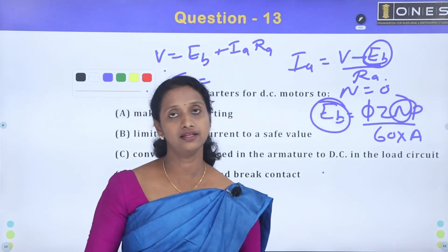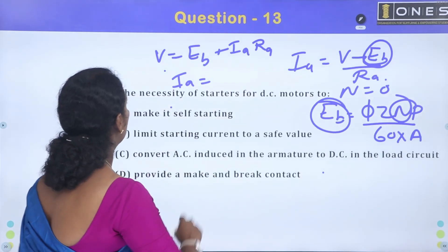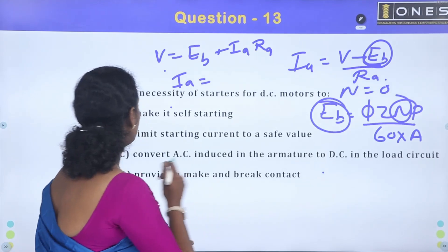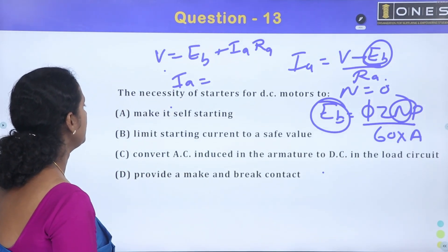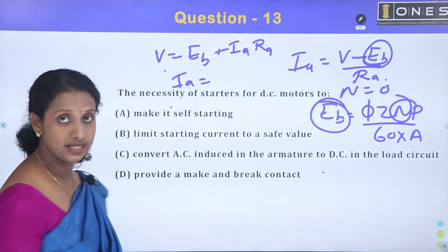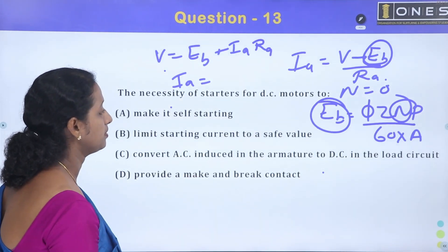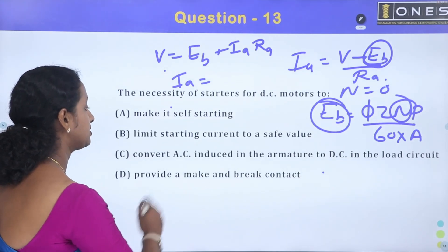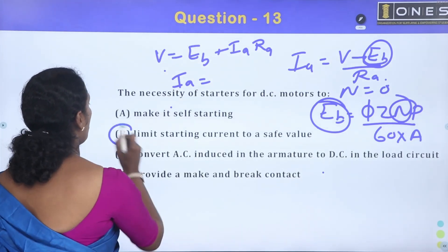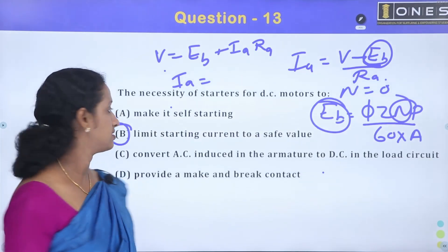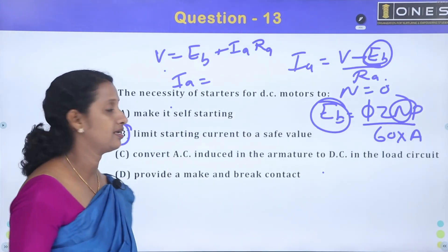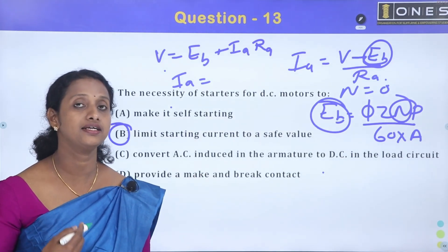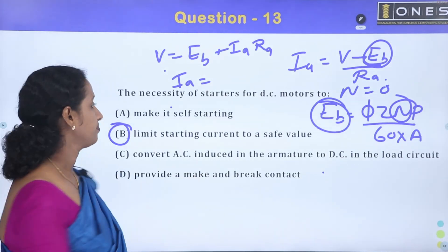So what is the necessity of a starter for a DC motor? The options are: make it self-starting; limit starting current to a safe value; convert AC induced in the armature to DC in the load circuit; provide make and break contact. Option B is the correct answer: to limit the starting current to a safe value. At starting time, resistance is added to limit the current.